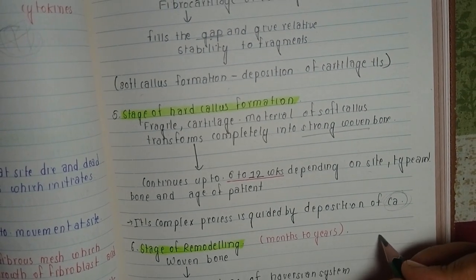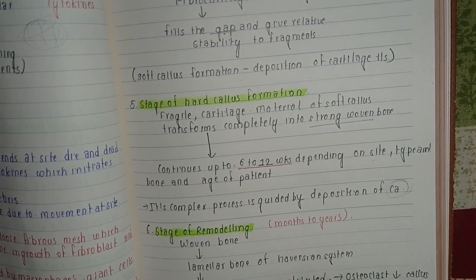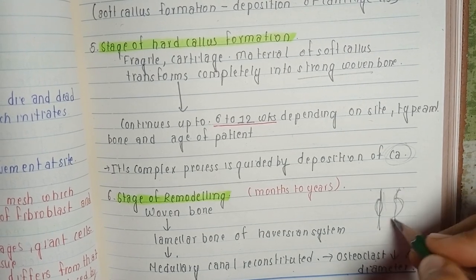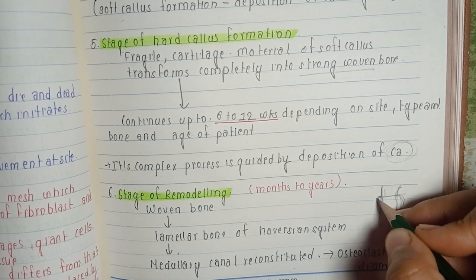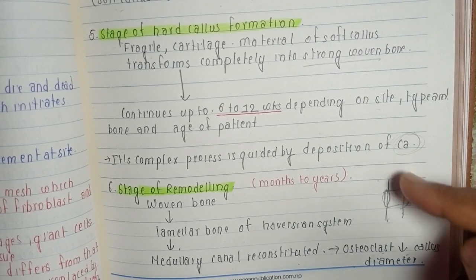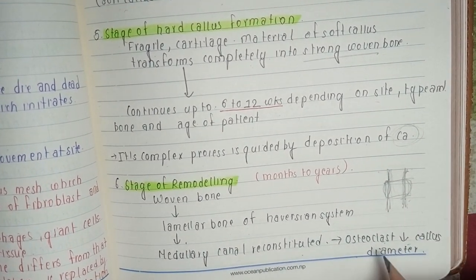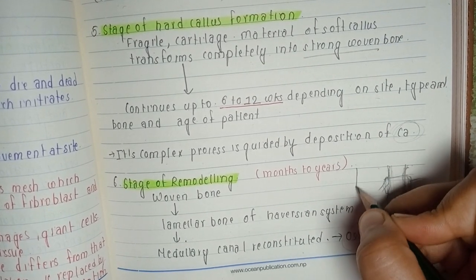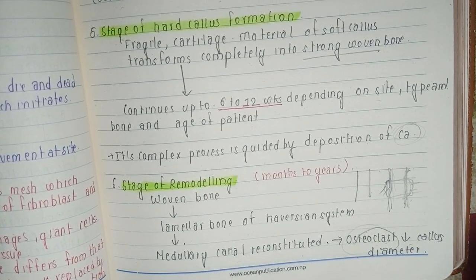The last stage is remodeling, which lasts for months to years. After the woven bone, there is formation of lamellar bone of the Haversian system. The callus deposited during fracture healing is not properly aligned in the bone, so osteoclasts break it down and create proper alignment of the bone.